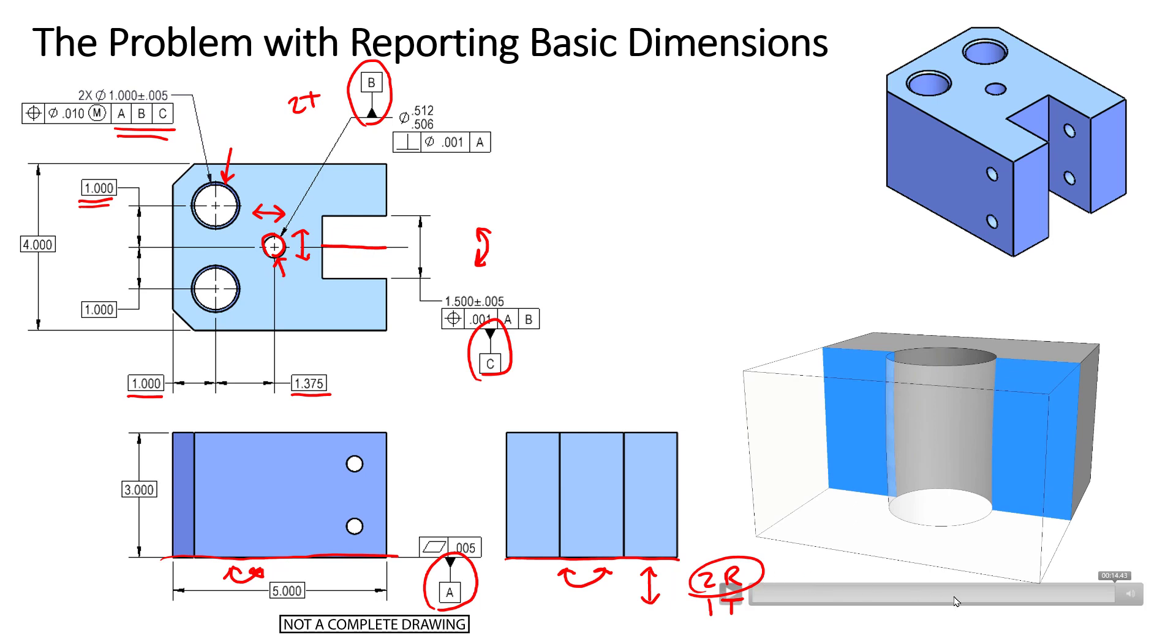Now, I'm going to back up this animation to orientation to further explain why reporting basic dimensions is not going to give you the full picture. If you're going to report basic dimensions, do you report from the top of the feature here or the bottom of the feature here? Likely, if you report from the top, this dimension here is going to be different than this dimension down here if you report from the bottom.